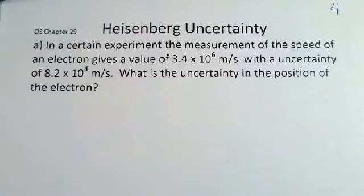This first calculation will deal with position and momentum. We want measurement of speed here to take place. We do that and we get 3.4 times 10 to 6 meters per second for the speed. It has an uncertainty of 8.2 times 10 to 4 meters per second. What's the resulting uncertainty in the position of the electron? This would be a limit of how well we can know the position of the electron.